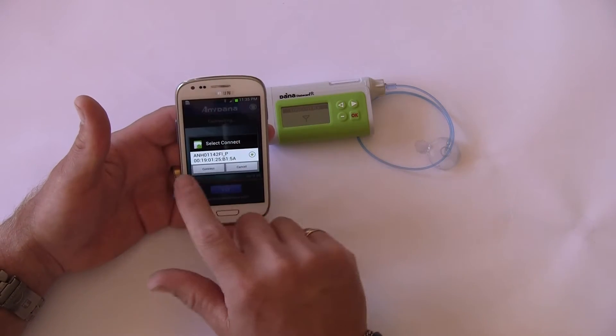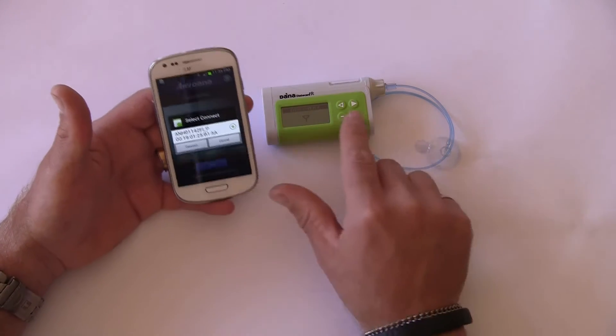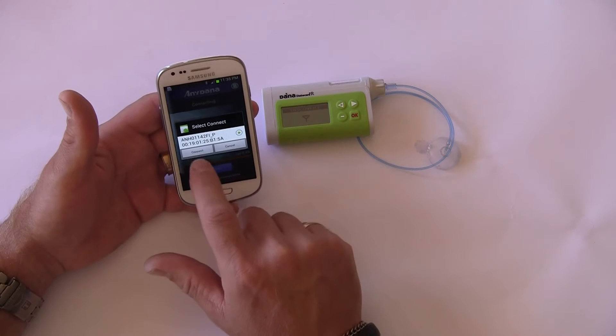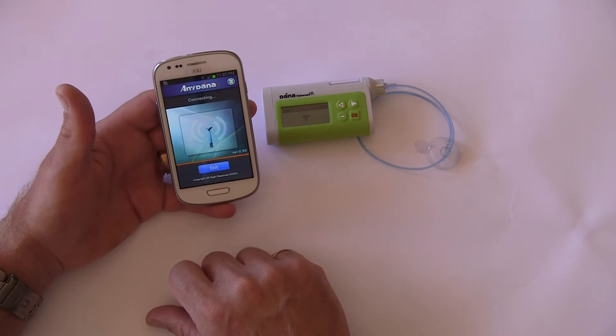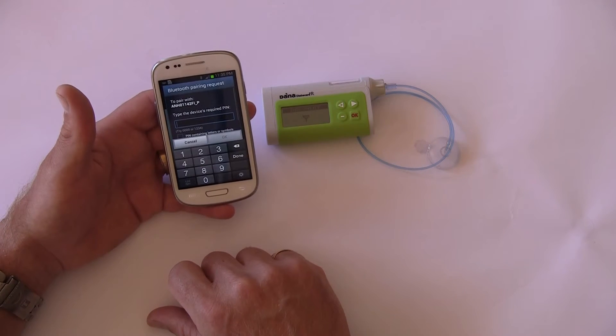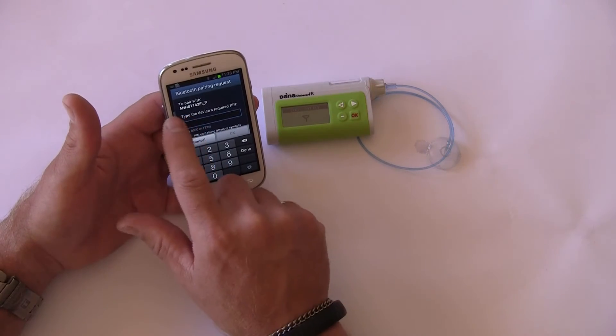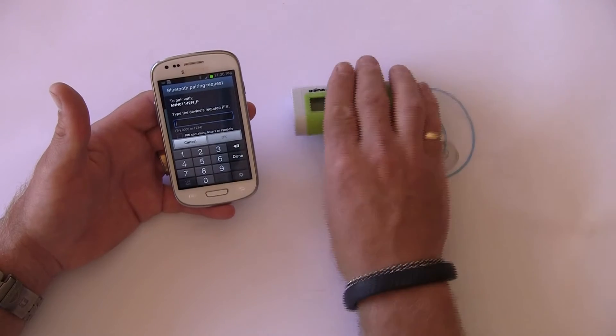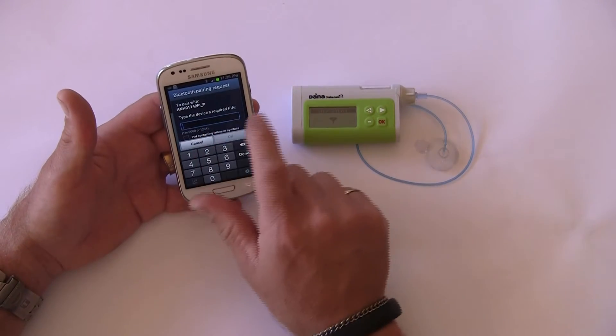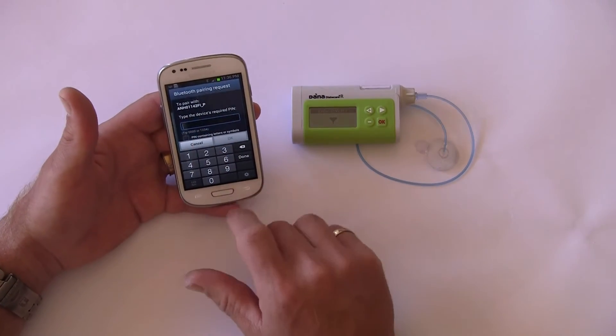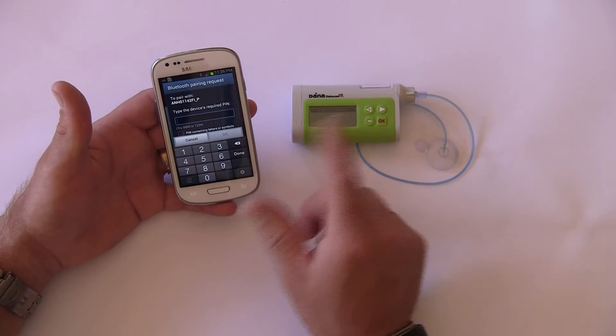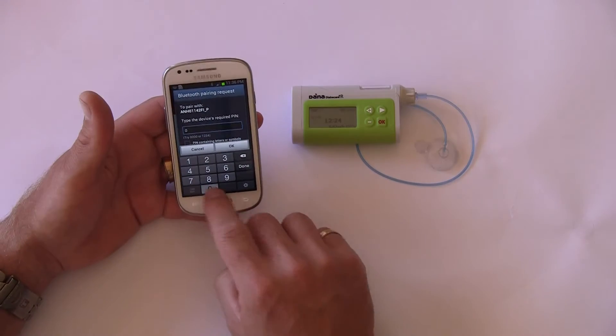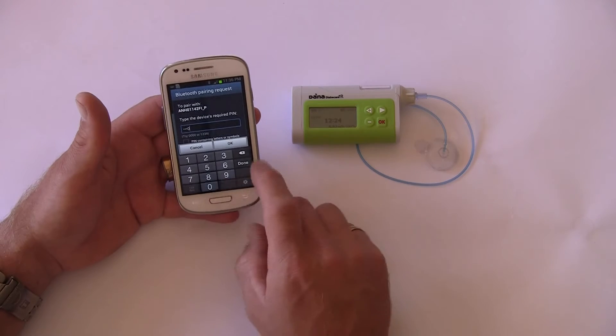Okay, it's come up and selected the serial number for our pump, so it's talking to one another, and we say connect. It's now reiterated once again our serial number across the top that we can confirm, and it's asking for a pin number. In this particular case, the pin number is 0000. Completed.